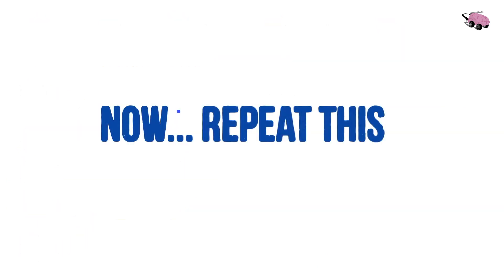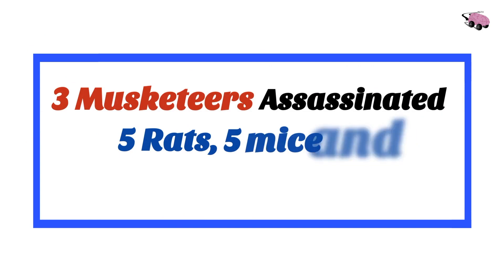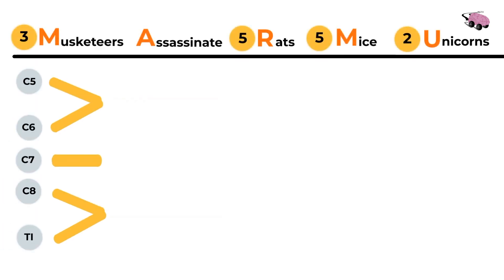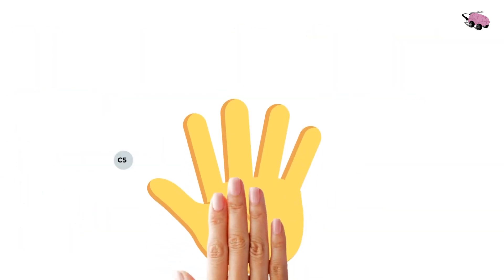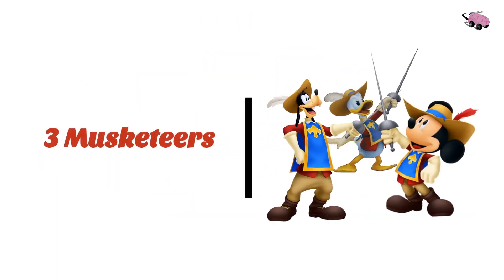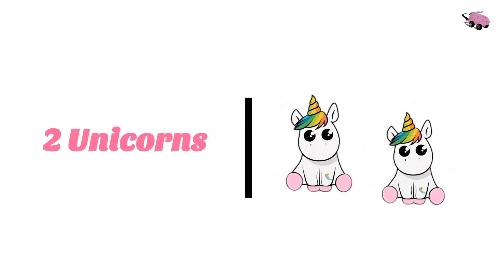We have our next mnemonic so repeat after me: three musketeers assassinated five rats, five mice, and two unicorns. We have our new mnemonic and our structure drawn in. Also here are the nerves that we'll label and study together. Always remember which fingers represent which root values.